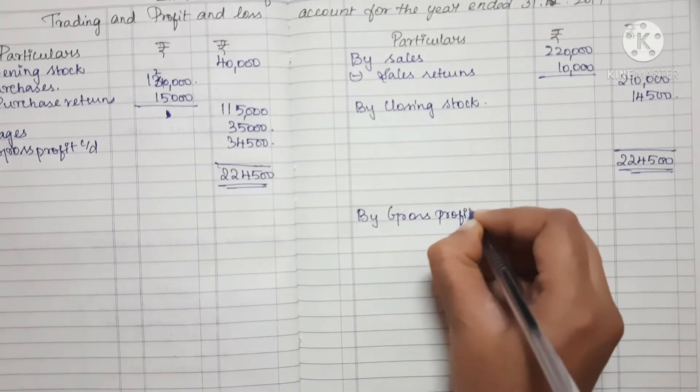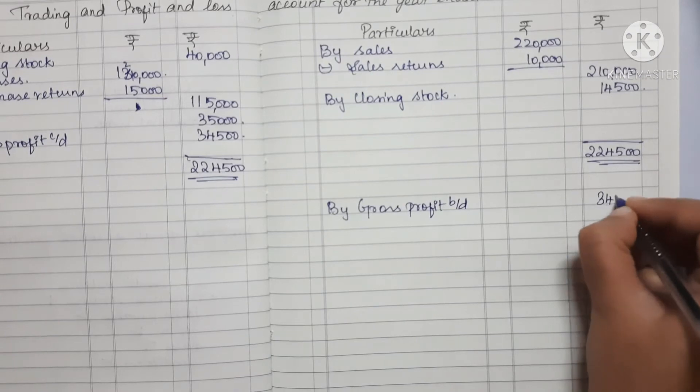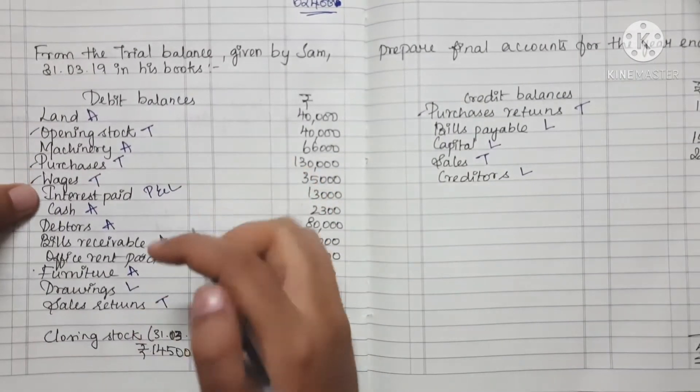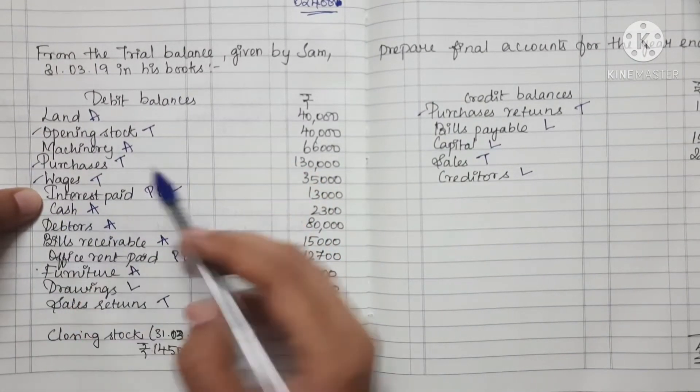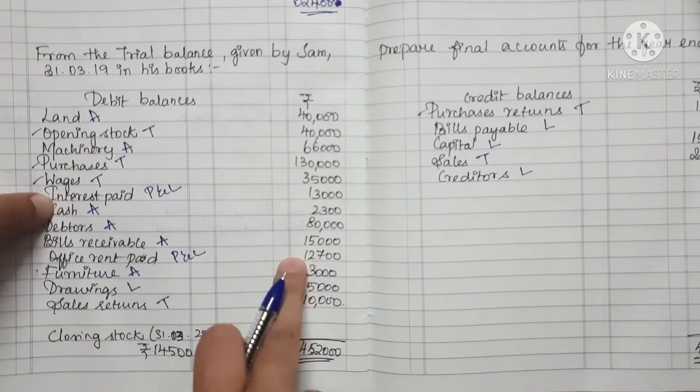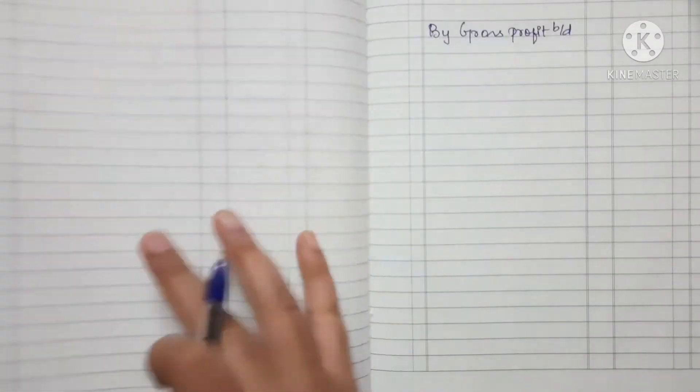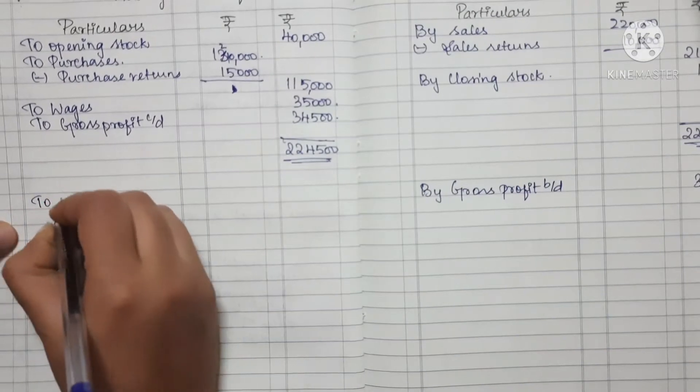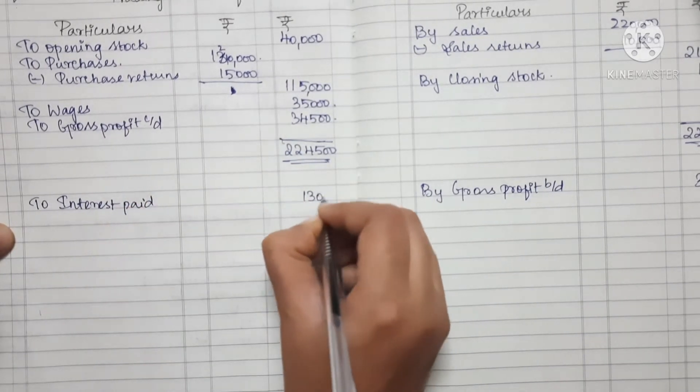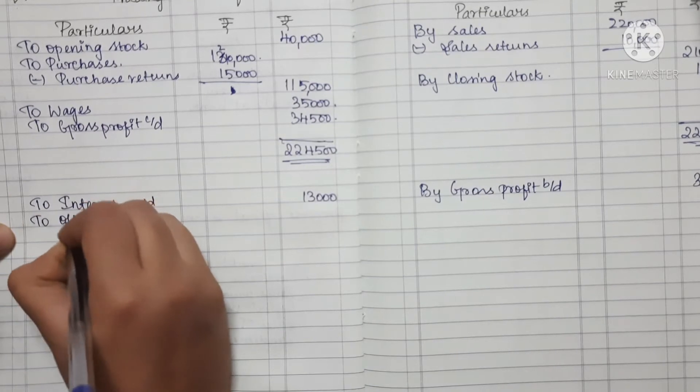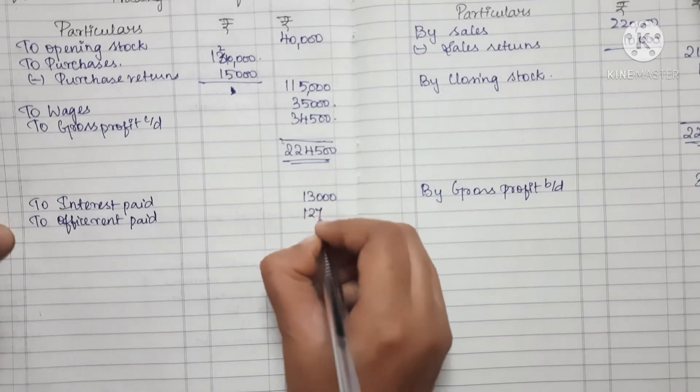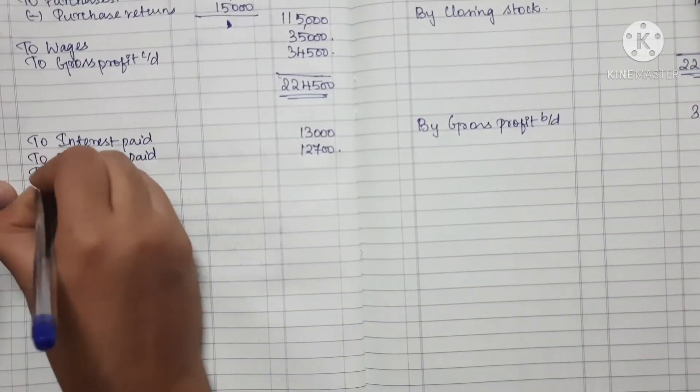Profit and Loss Account: On the debit side, we have Interest Paid of 12,700. Next is Office Rent Paid, also 12,700. We close with Net Profit carried down.